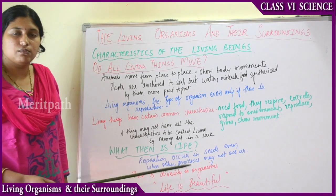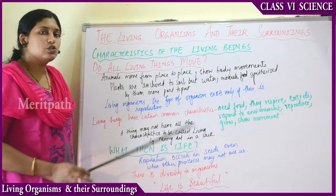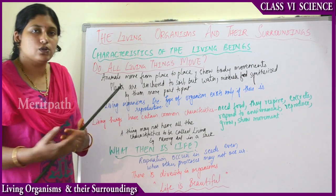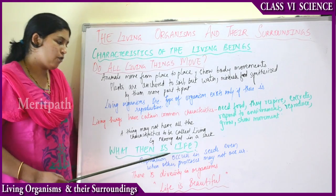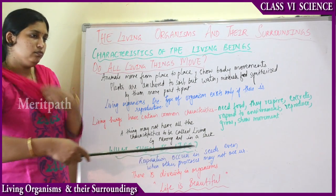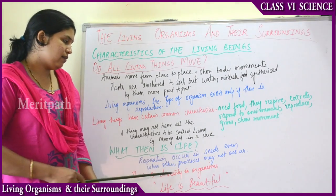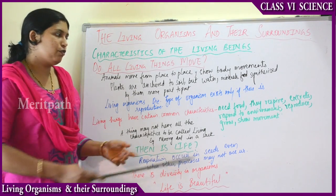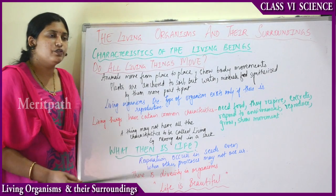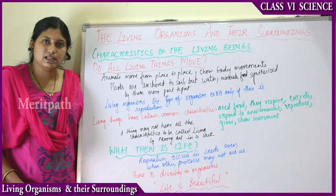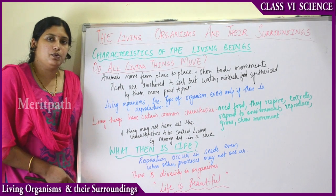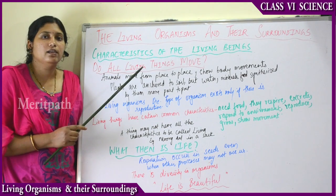Living things show all the life processes, movements, and activities. Non-living things do not show all these. So what then is life? Because a living thing may not have all the characteristics, and non-living things do not have any of these characteristics. There is a lot of diversity in all the organisms living around us — we cannot definitely say what is life, but we can conclude that life is beautiful. That is how this chapter ends.